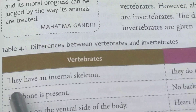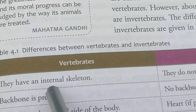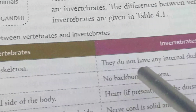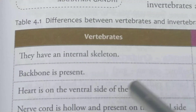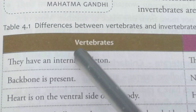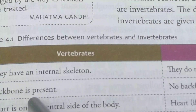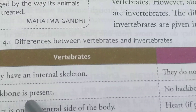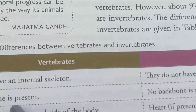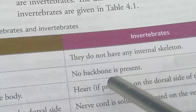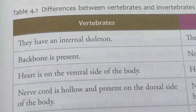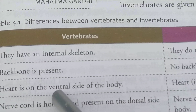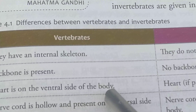Vertebrates have an internal skeleton; invertebrates do not have any internal skeleton. In the case of vertebrates, the backbone — meaning the spinal cord or vertebral column — is present. Invertebrates have no backbone. The heart is on the ventral side of the body in vertebrates.